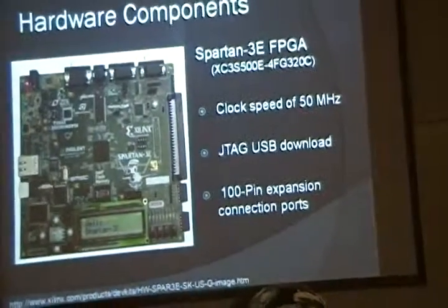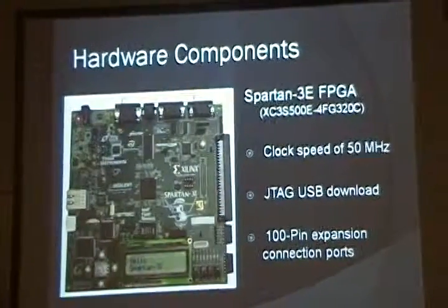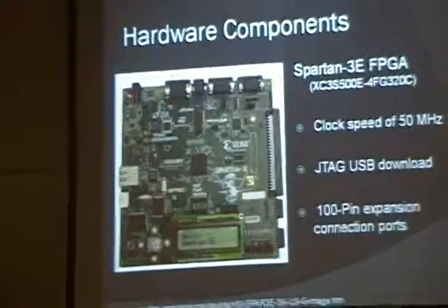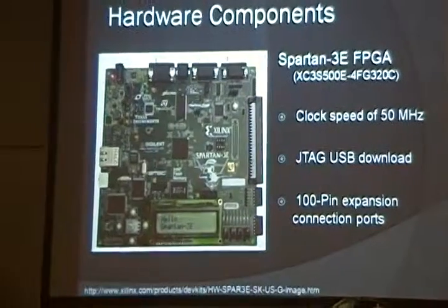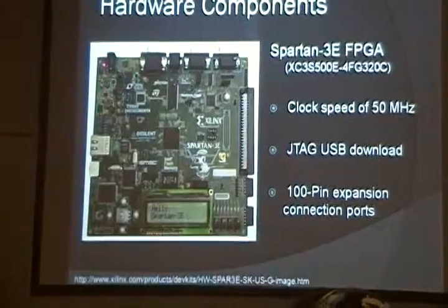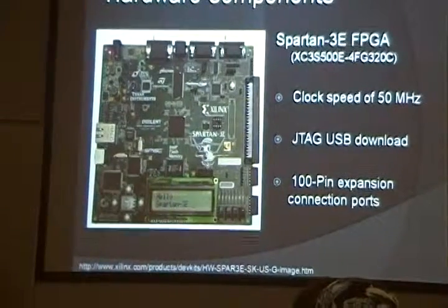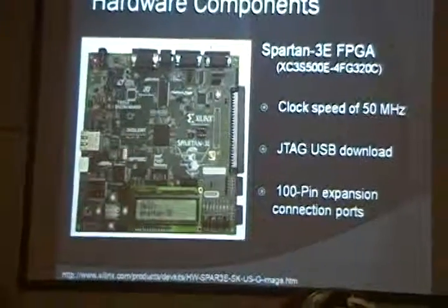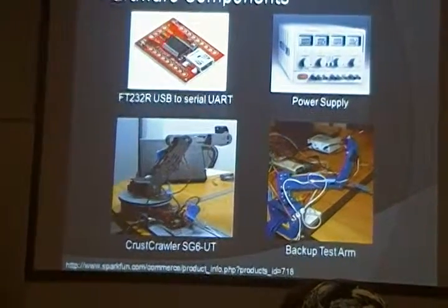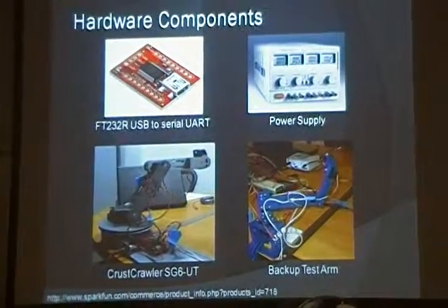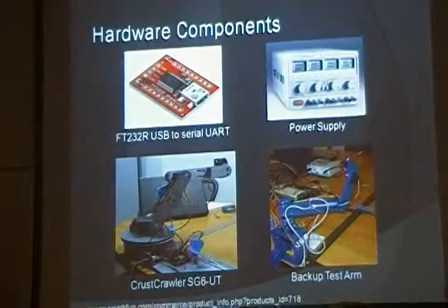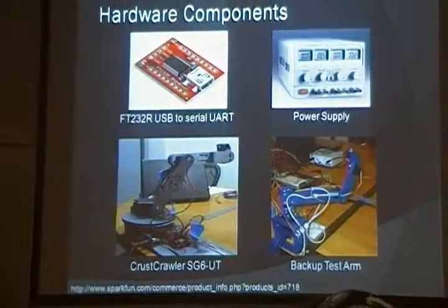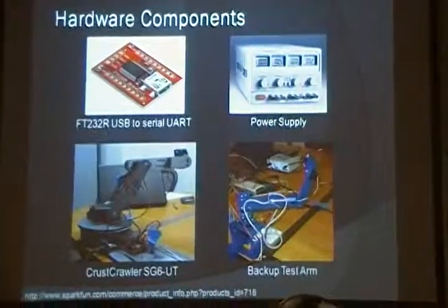For the hardware component, we use the Xilinx Spartan 3E FPGA chip on a digital development board. We chose Xilinx because we know that Xilinx provides excellent development tools. And because of the JTAG USB download, it was easy for us to write the VHDL code and port it onto the FPGA board. The FPGA itself has a clock speed of 50 megahertz. We also use USB to serial UART, which enables us to communicate between PC and our system. We had a power supply that provided five volts of power to each servo motor. And we had two robotic arms with five degrees of freedom to test our controller.